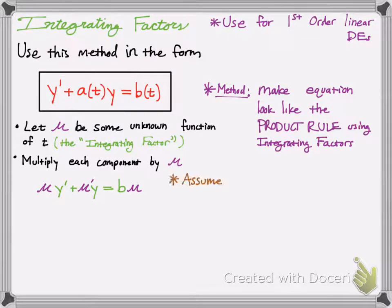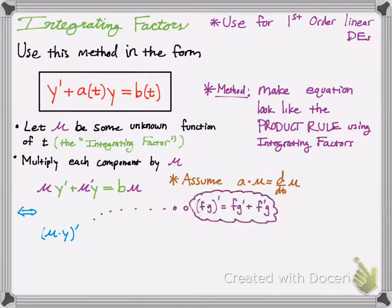So if we assume that a times mu is equal to mu prime, or dt of mu, then we can say that that is the product rule. So mu, it's like the derivative of the first times, f times g prime is equal to f, the first times the derivative of the second, plus the second times the derivative of the first, you know, the chain or the product rule. So that's the product rule for you.